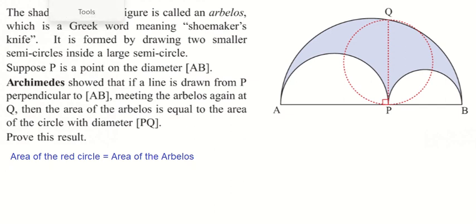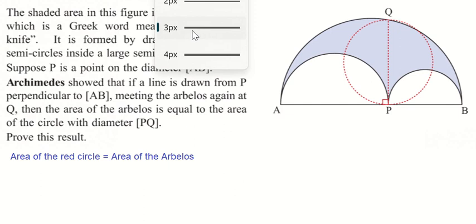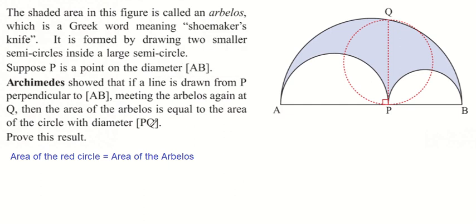So the area of the red circle is π times R, which in this case is PQ divided by 2. So π(PQ/2)², that's our radius squared.